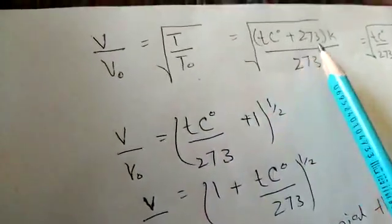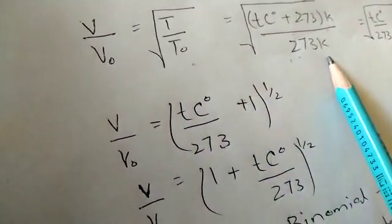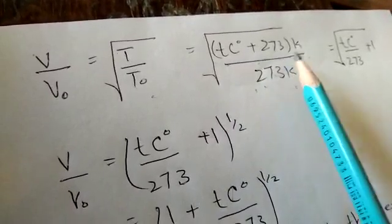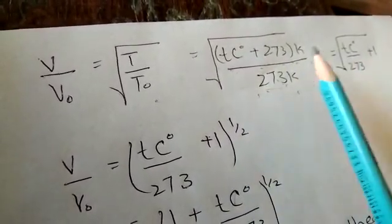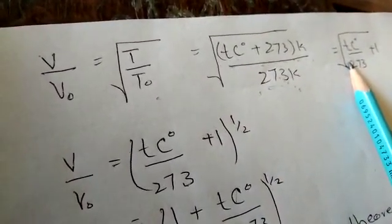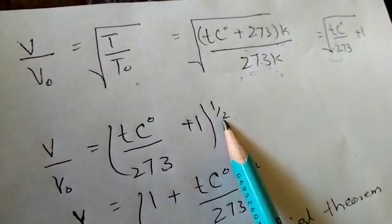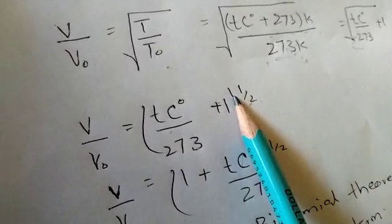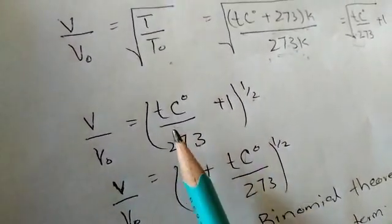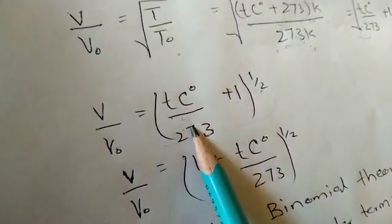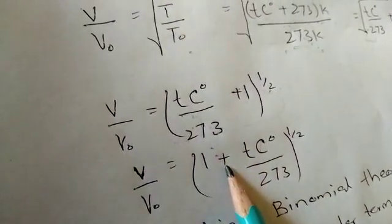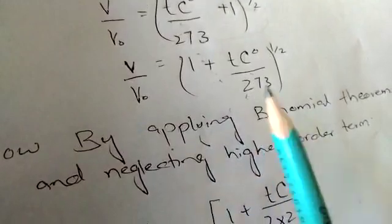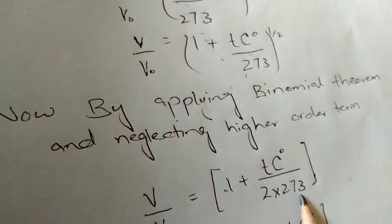So T equals T_centigrade plus 273 Kelvin, and T0 equals 273 Kelvin. Dividing by 273, we get 1 plus T_centigrade over 273 inside the square root, which we write as the power one half. We have two terms — term A and term B — raised to a certain power, so we apply the binomial theorem and neglect higher order terms (squared and above).